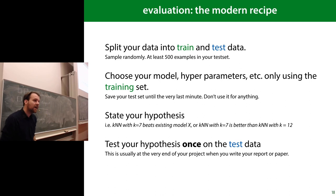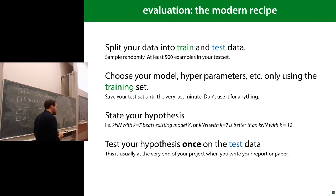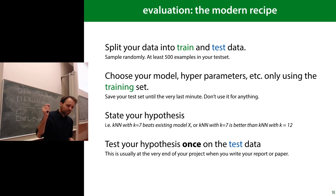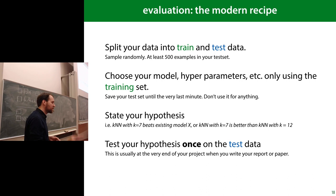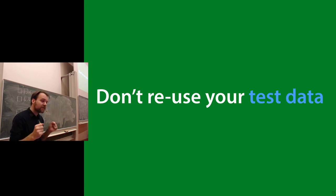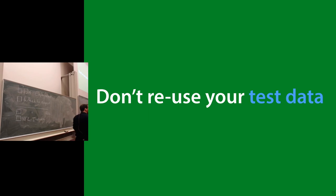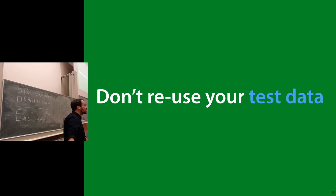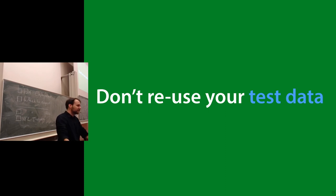When your project is finished and you have conclusions you think are true, state those conclusions as a hypothesis — for example: 'I think a KNN classifier with k=7 is the best for this data.' Then you test your hypothesis once on the test data. You look at your test data only once. Don't reuse your test data. This requires you to think about it at the start of your project — once you get data, before you do anything else, split it into test data and training data.